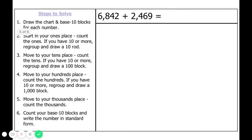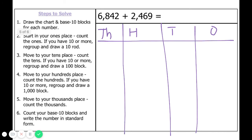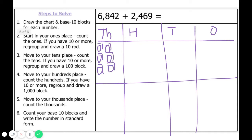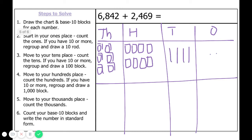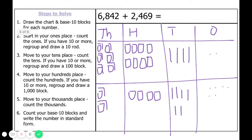Let's do another one. Let's start by drawing that chart. We have 6,842: six thousands, eight hundreds, four tens, and two ones. Then we have 2,469: two thousands, four hundreds, six tens, and nine ones.